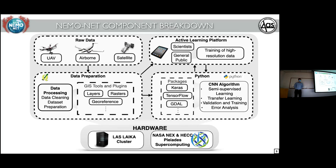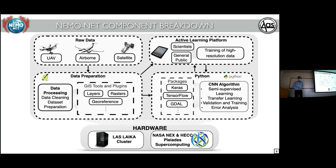This is the general NEMONET high-level overview of all its components. At the meat of the project on the right-hand side, I spent most of my time in the bottom right, which is the Python package and the CNN algorithm. My colleague Jared was responsible for the active learning platform and developed most of the app. I'll also talk a little about raw data preparation from FluidCam and other satellites.